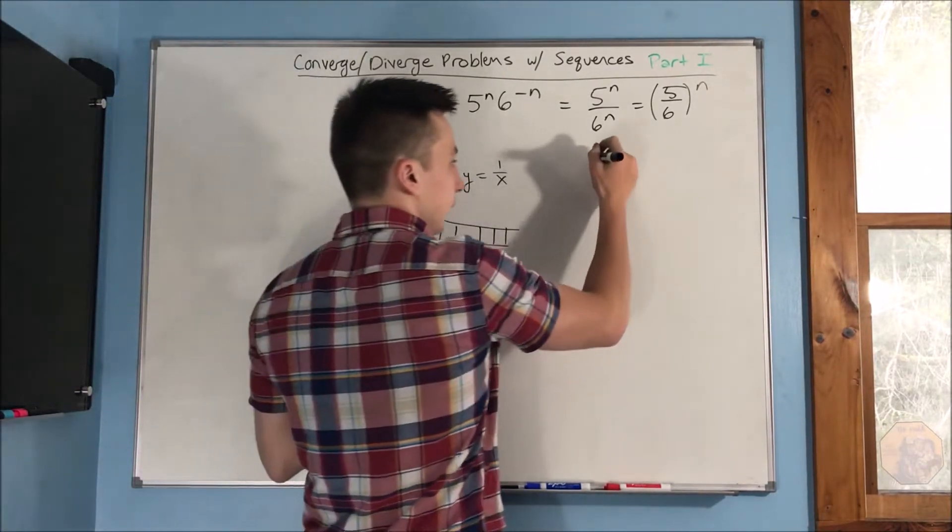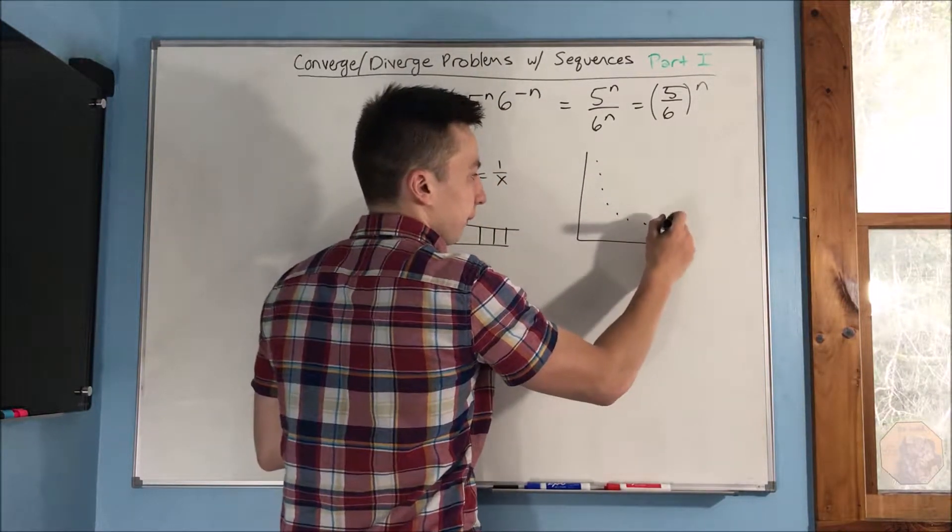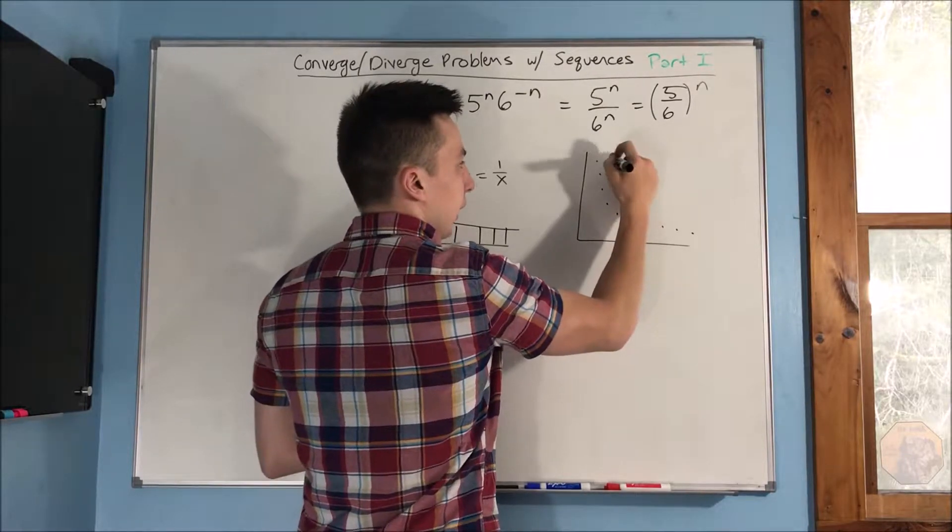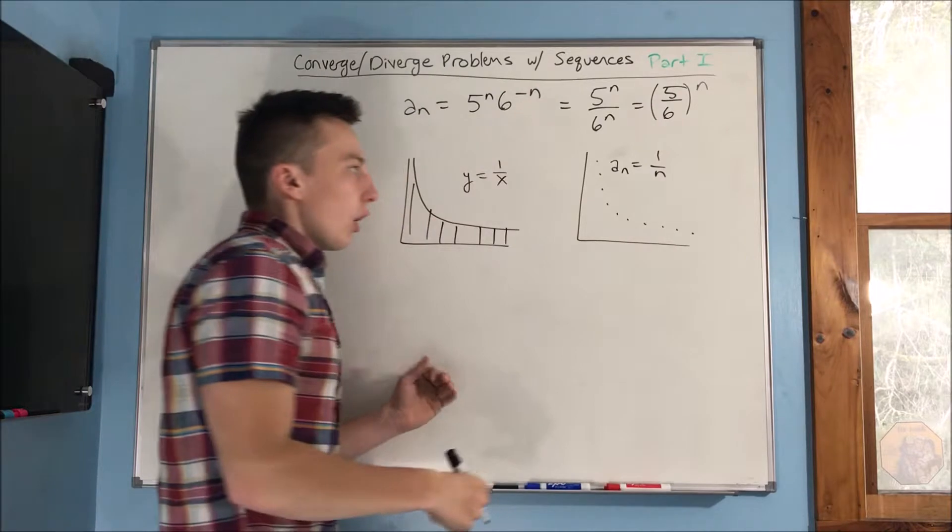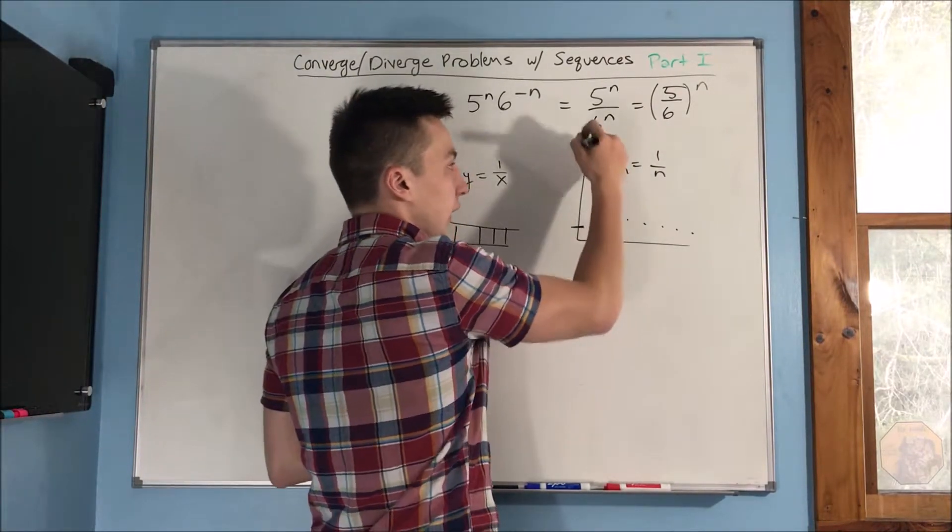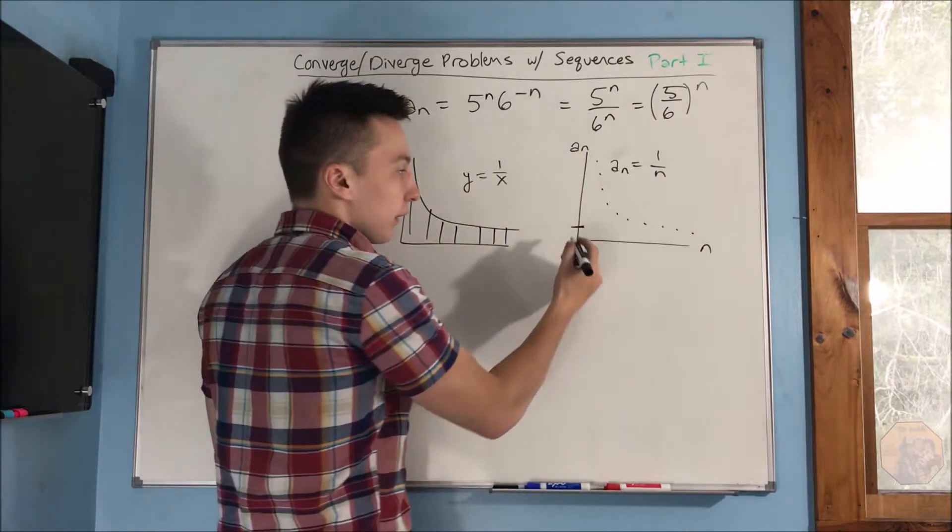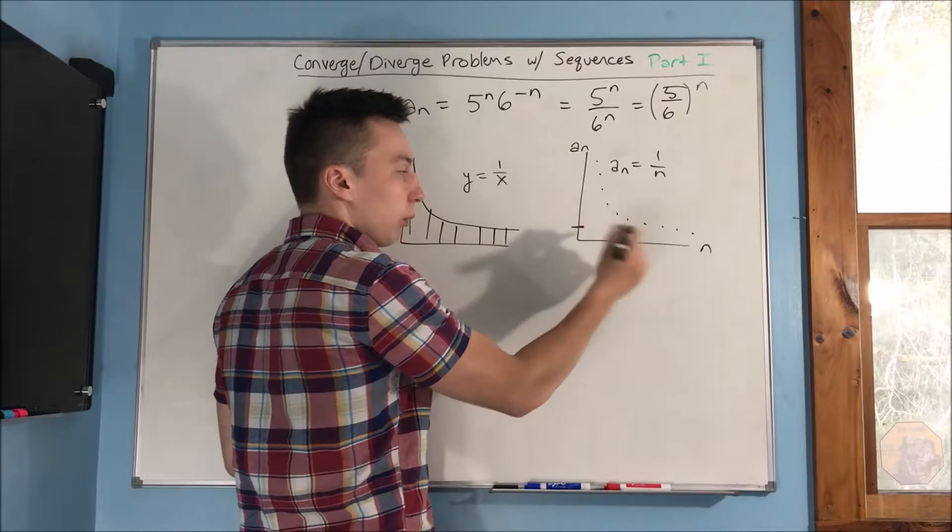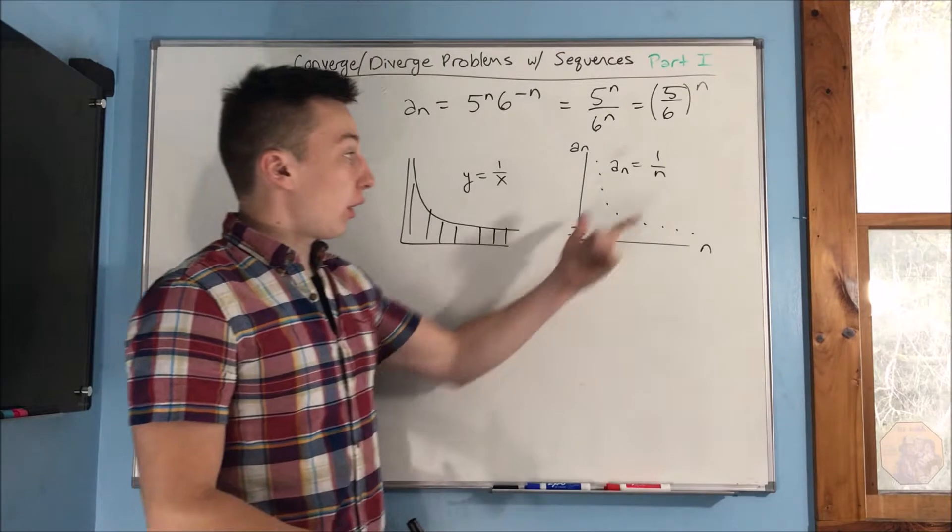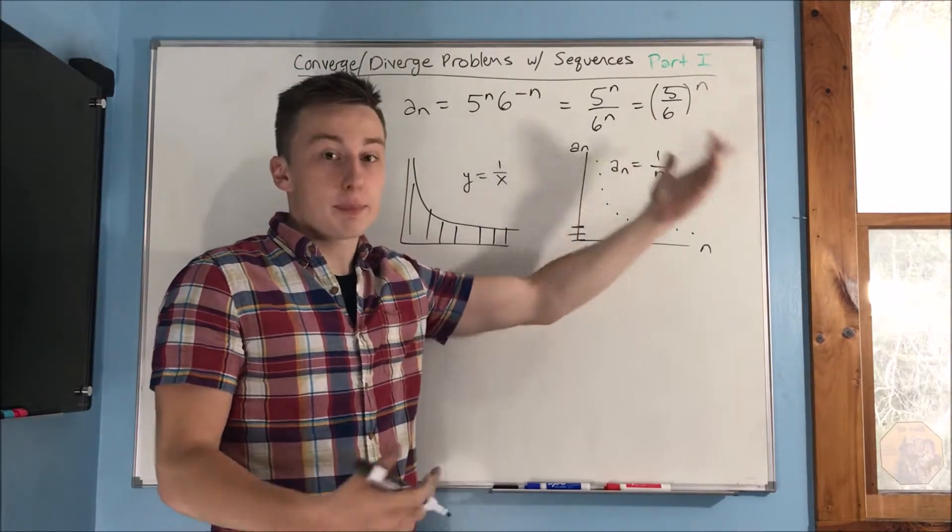But with sequences, that's not what we're focused on. So we have 1 over x. I guess you could say a sub n equals 1 over n. What we're focused on is the actual a sub n value itself. This is the a sub n axis, this is the n axis. We're focused on this a sub n value. Is it getting, where is it approaching? And of course, here it's approaching 0. So for our answer here, this would end up being 0, and so will this, because it's basically the same thing.